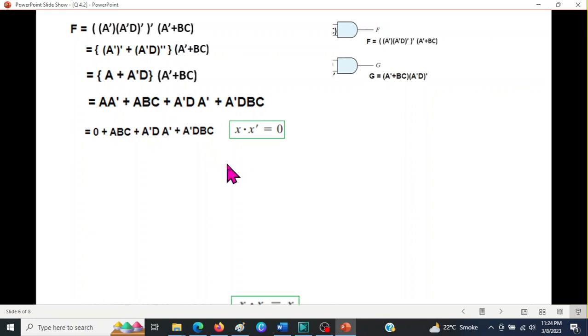For the simplification, first of all, we can eliminate these two A's by following this formula X·X = X. So this will be ABC. And this will be A'D. And this we are not touching.